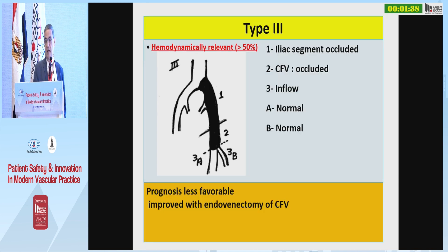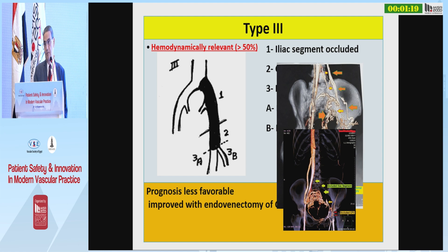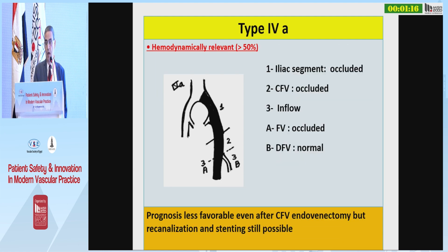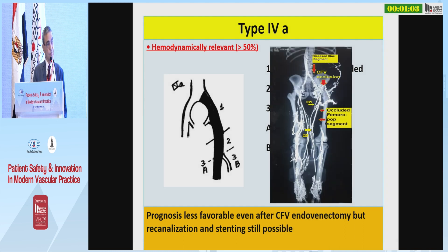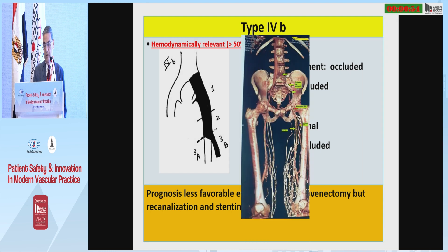Type 3 has the iliac segment occluded and the station occluded, but both inflow vessels are normal. The prognosis is less favorable, with extra-pelvic or intra-pelvic collateralization seen in cases. Type 4 has the iliac segment and station occluded, and one of the inflow vessels is also occluded — type 4A where the femoral vein is occluded, and type 4B where the profunda vein is occluded.